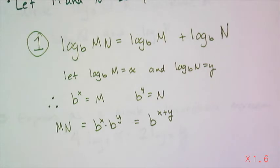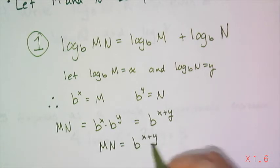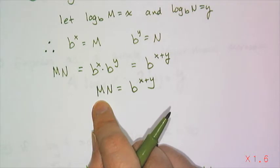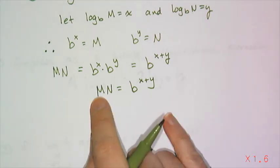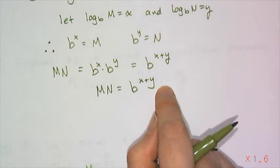Now I am going to look at this statement, mn equals b to the x plus y, and I'm going to do some work on this. And the work I'm going to do is apply log base b to both sides to get x plus y out of the exponent.